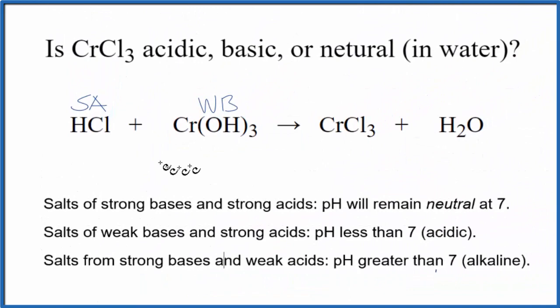So looking at our rules, we're looking for a strong acid and a weak base. Here's a strong acid and a weak base. When they react, neutralize, produce this chromium-3-chloride, the pH is going to be less than 7. That's going to be an acidic solution.